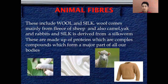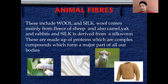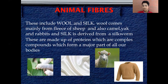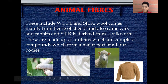The two most widely used animal fibers are wool and silk. Wool comes mainly from the fleece of sheep, and also from animals such as camels, yaks, and rabbits. Silk, a very loved material for clothes, is derived from the silkworm. The building block of animal fibers is proteins, which is a complex compound found in all of our bodies.